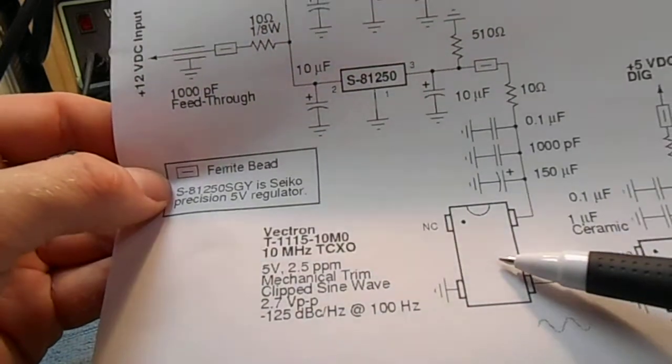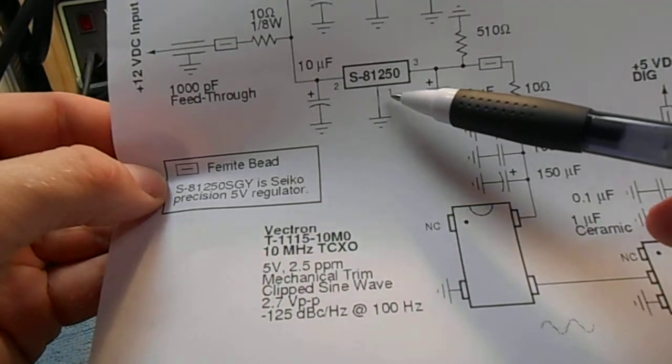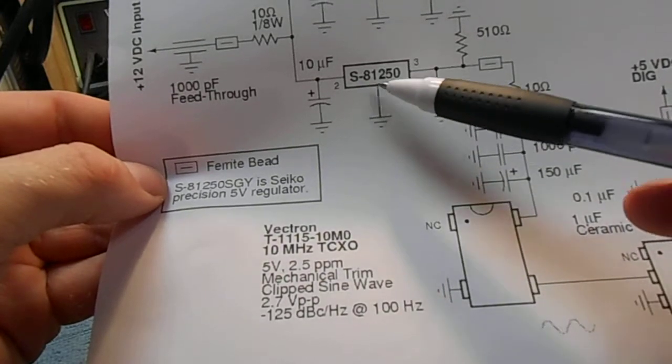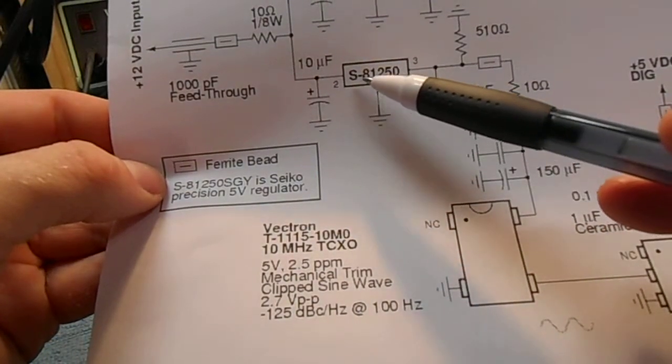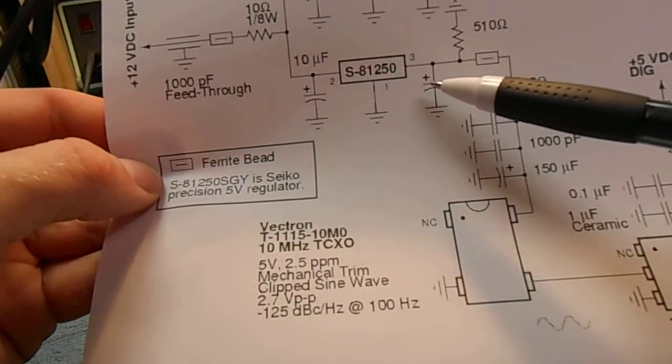The oscillator is going to have its own low noise precision 5 volt voltage regulator. I'm using a Seiko S-81250 5 volt precision regulator.